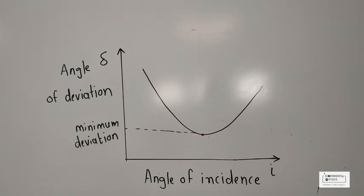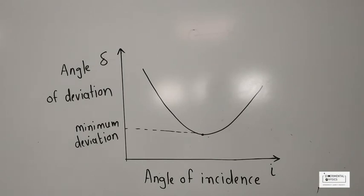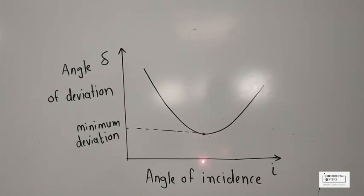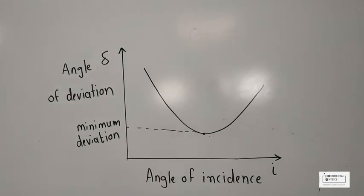At a certain angle of incidence you see minimum deviation. At this point the refracted green light in the demo was at the extreme point on the right side. After that, even if I increased the angle of incidence, the angle of deviation increased — and physically you saw the green laser coming back towards the left. So this is the angle of minimum deviation: one specific angle of incidence I for which you get minimum deviation. Now you know the mystery behind the shape of this curve. Thank you for watching — I'm Rishikesh Vibhuti and you are watching Experimental Physics.